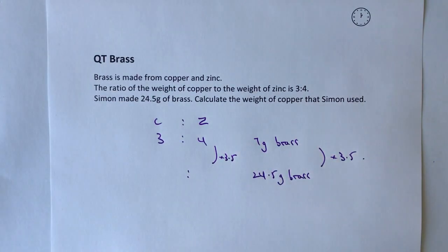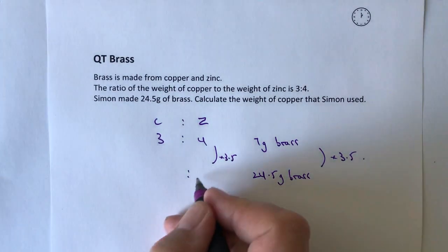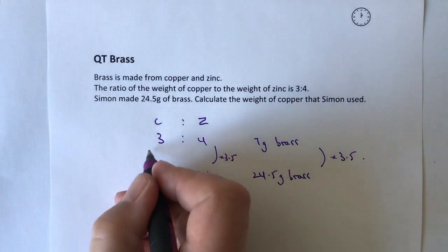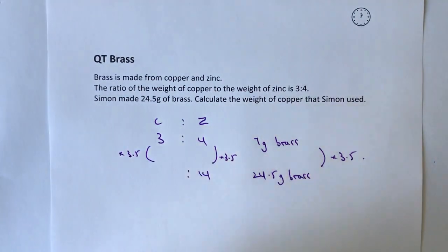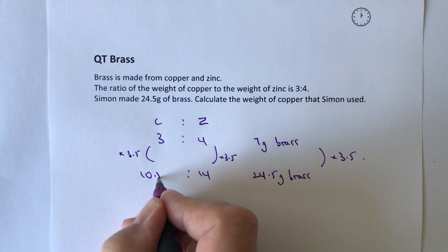So four times three and a half is going to give me fourteen, and then three multiplied by 3.5 is going to give me 10.5.